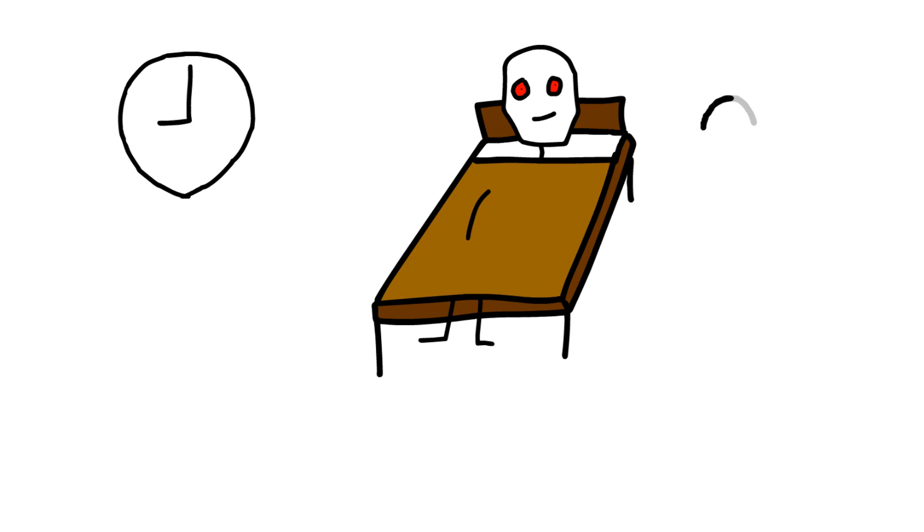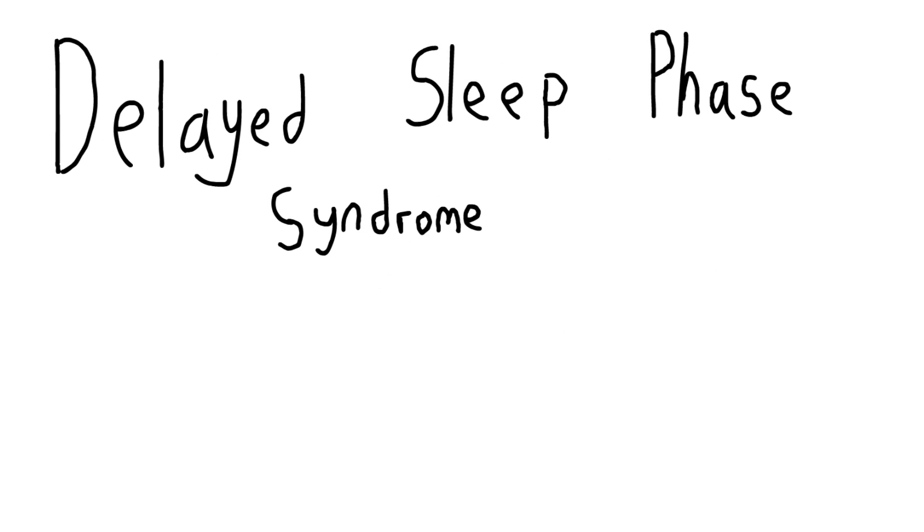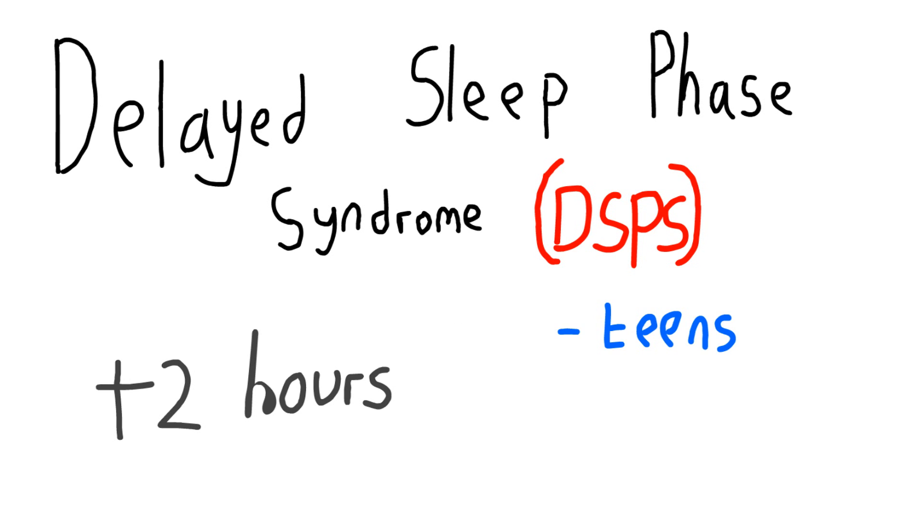Well there could be a few reasons for this and the first is DSPS and this delays you falling asleep on average by 2 hours. It's most common in teens and young adults but it can carry on through later life.